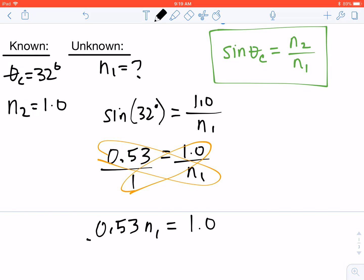To get N1 all by itself, we'll divide by 0.53 on both sides. N1 is going to end up equaling 1.89 as our index of refraction.